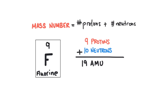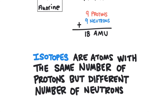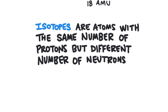There are other kinds of fluorine. For an atom to be fluorine, it must have nine protons because the atomic number of fluorine is nine. However, the number of neutrons can vary. There is one kind of fluorine that has nine protons and nine neutrons, so its mass number would be 18 amu. These are both fluorine because they have nine protons, but they have different masses. Atoms that have the same number of protons but a different number of neutrons are called isotopes.